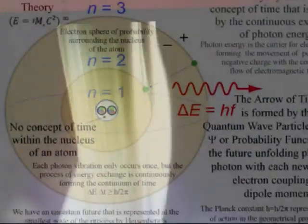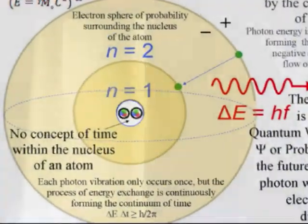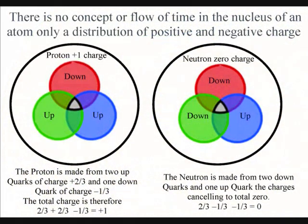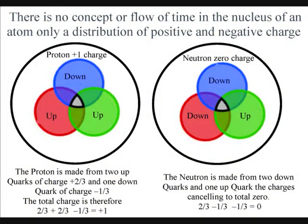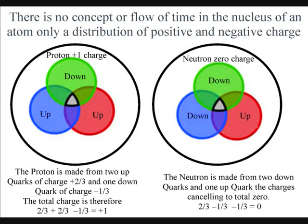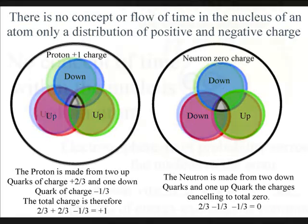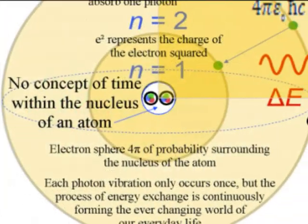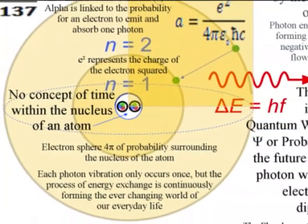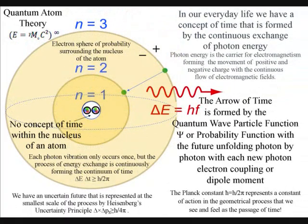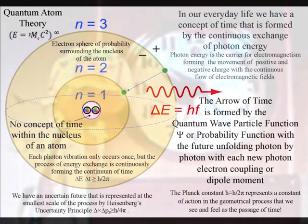And if we look down into the subatomic world within the nucleus of an atom, we have no concept of time, only the movement of part charge or fractions of charge. And this is logical if what we see and feel as the passage of time is formed by a process of energy exchange relative to the electron probability cloud that surrounds the nucleus.